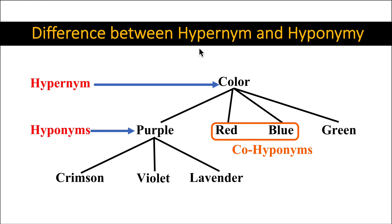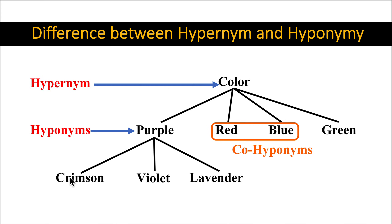Difference between hypernym and hyponymy. Hypernym is color — it is general. Color is general, and then we have more specific words: purple, red, blue, green. Further, purple can have even more specific shades of color: crimson, violet, lavender. So red, blue, green are co-hyponyms of color, and crimson, violet, lavender are co-hyponyms of purple. Purple further has many other branches — many co-hyponyms.